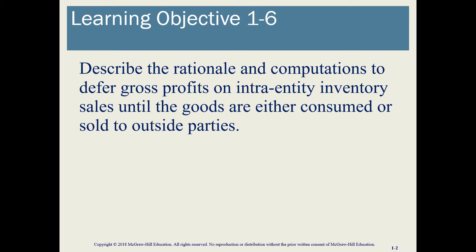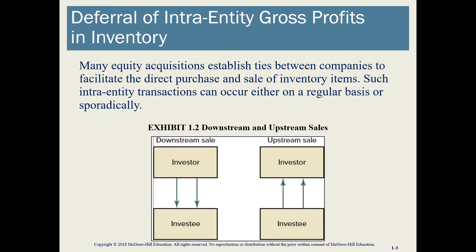For Learning Objective 6, we're talking about intra-entity transactions. We mentioned these as part of the significant influence criteria — transactions between investor and investee. In this case, we are talking about sell and purchase of inventory. The sales of inventory can take place from the investor to the investee, or from the investee to the investor, so we need to have that clear before we proceed.